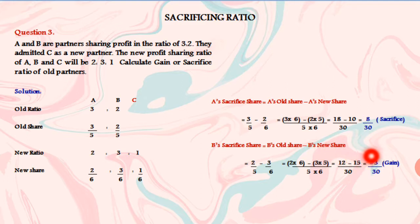The minus figure means gain. 3 by 30 is the gain. The minus figure indicates gain. When new share is greater than old share, the partner gains. A is given to sacrifice, B is given to gain. A sacrifices and B gains.